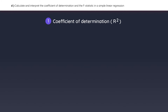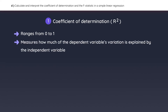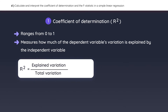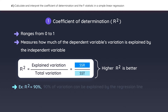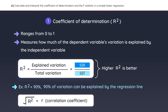The coefficient of determination, also known as R-squared, ranges from 0 to 1, and it measures how much of the dependent variable's variation is explained by the independent variable. It is calculated as the explained variation divided by the total variation, which is the same as the sum of squares regression divided by the sum of squares total. The higher the R-squared, the better the model. A value of 90% means 90% of the variation can be explained by the regression line. You should also note that if you take the square root of R-squared, you get the correlation between X and Y.